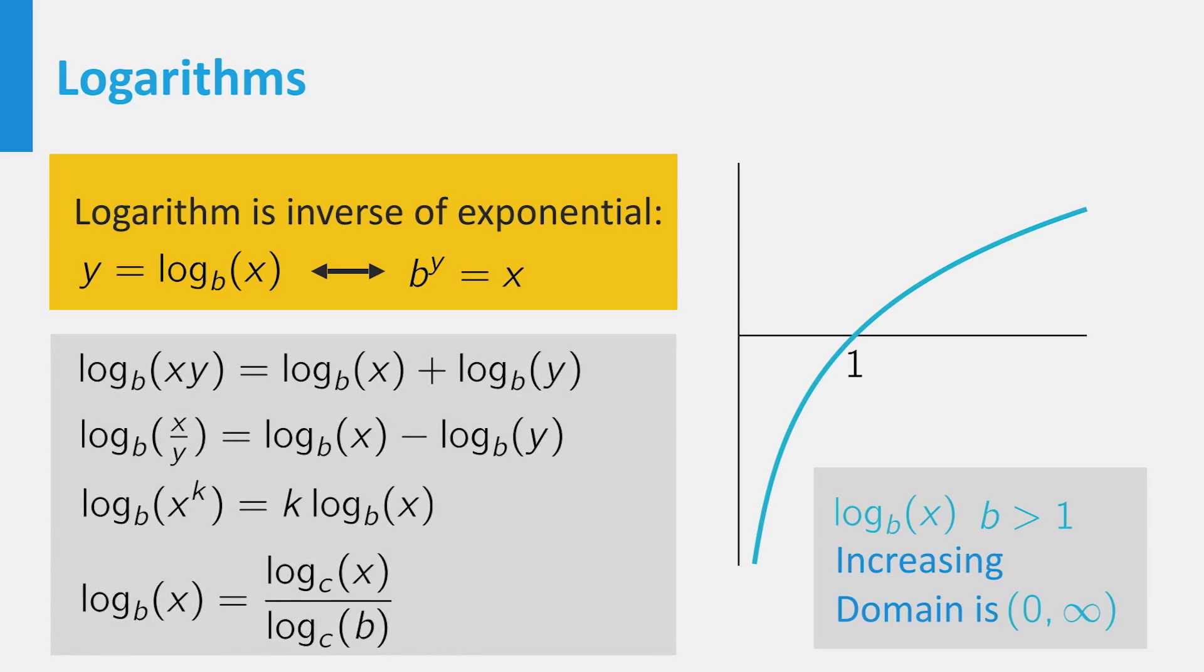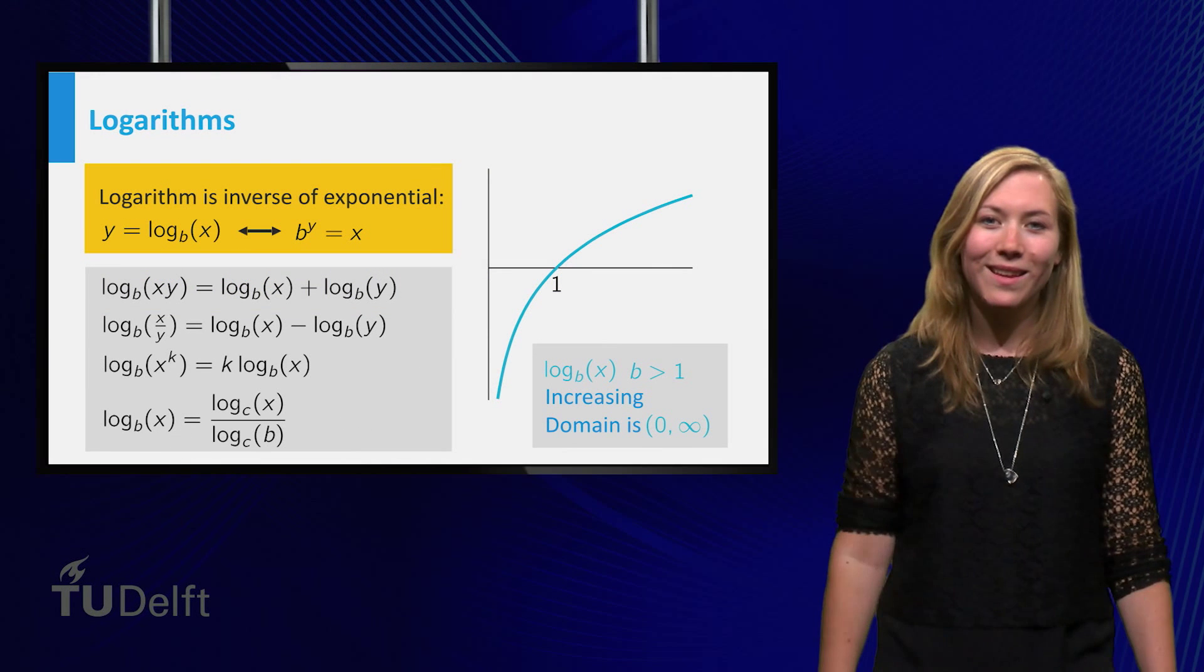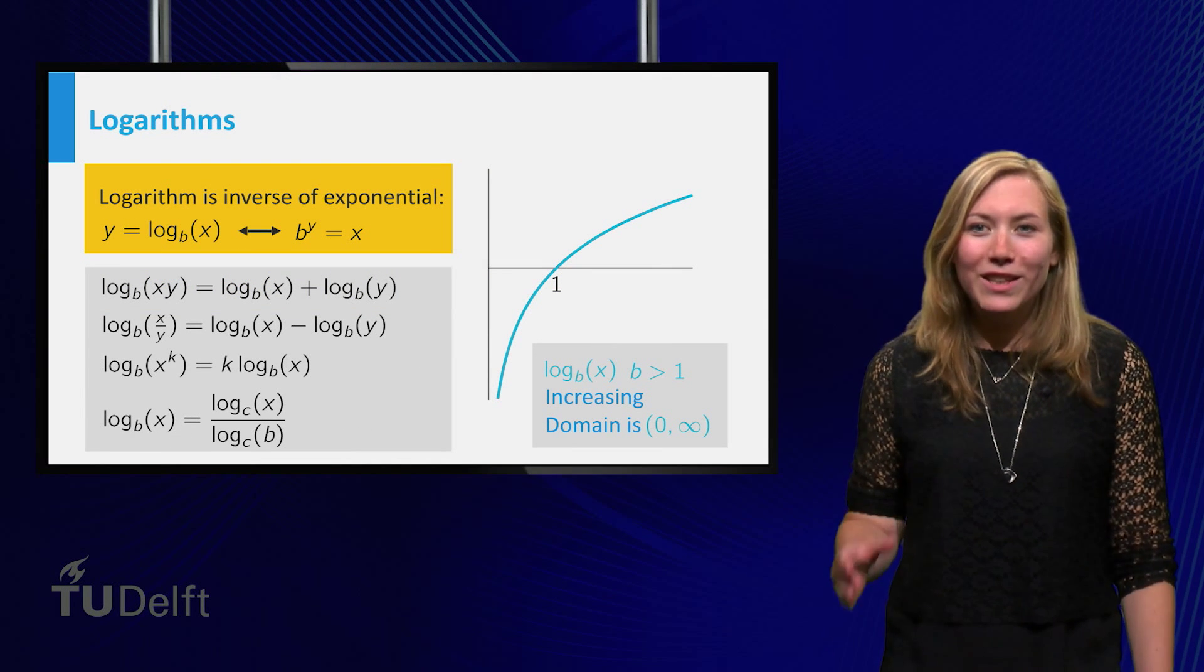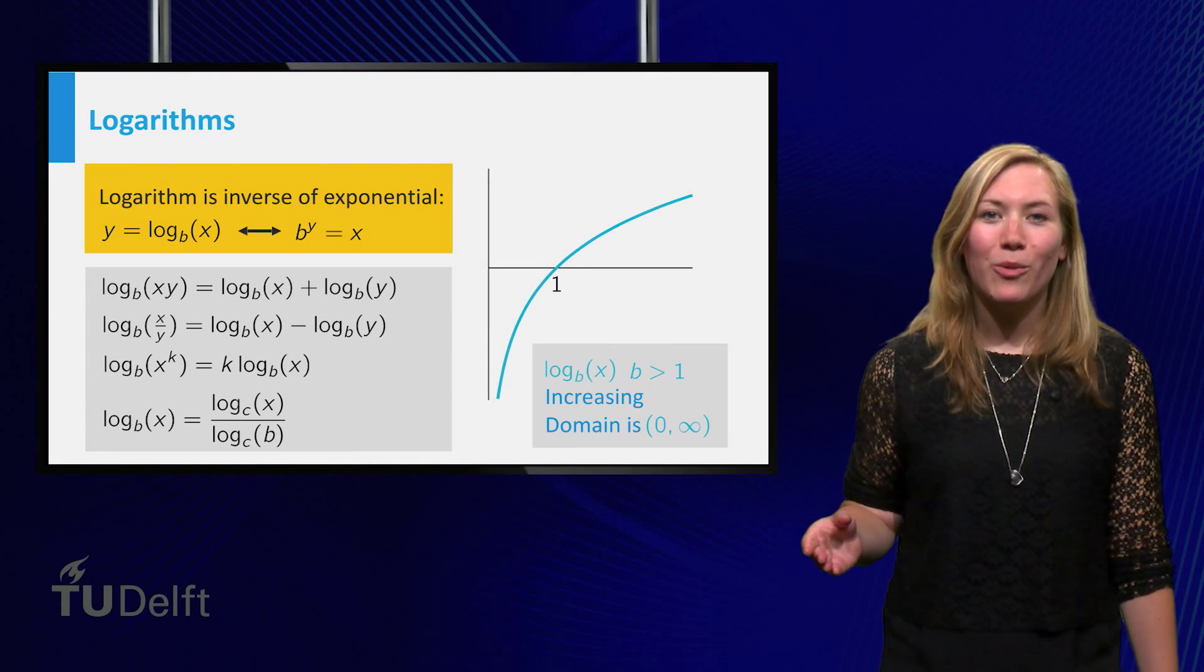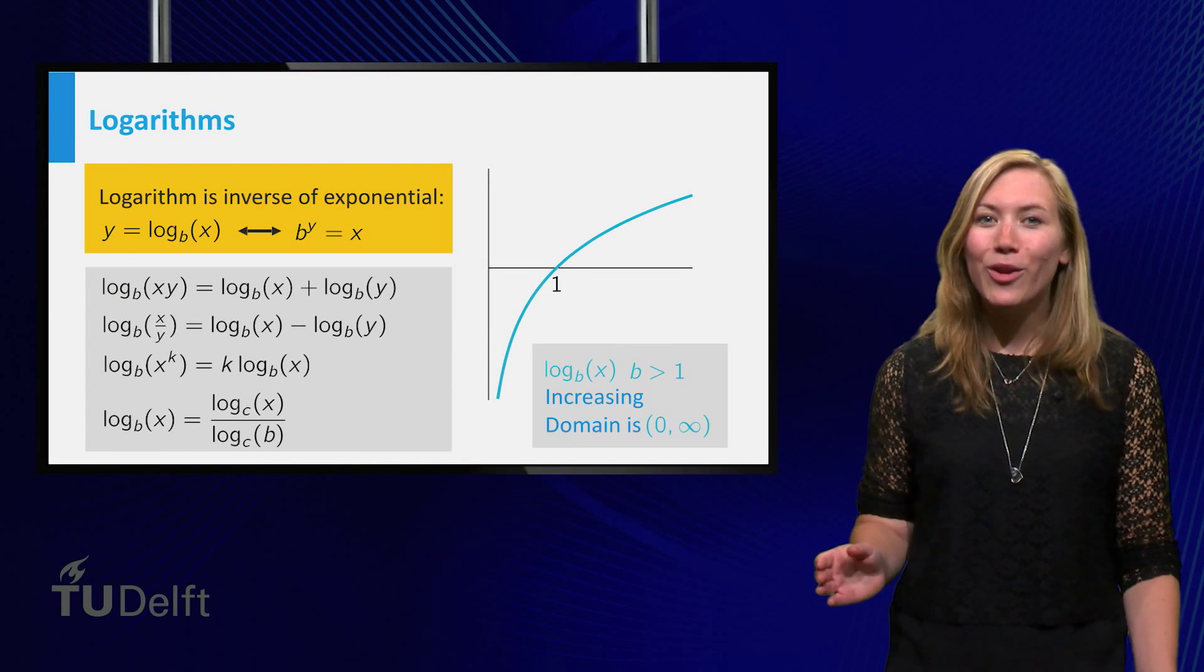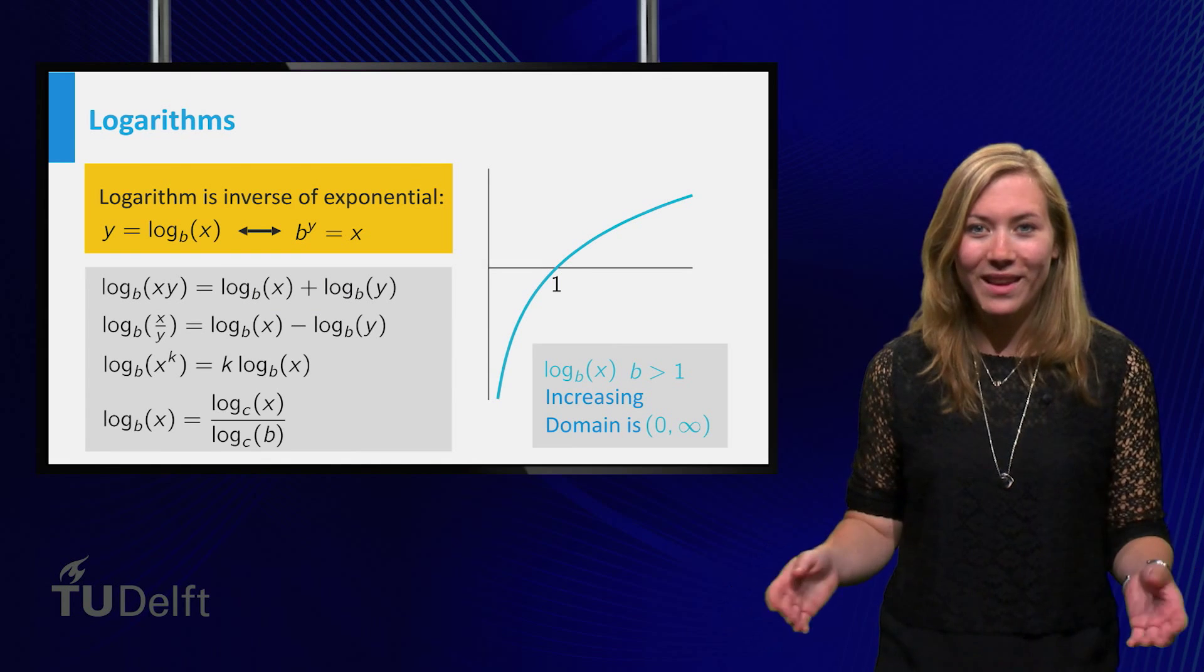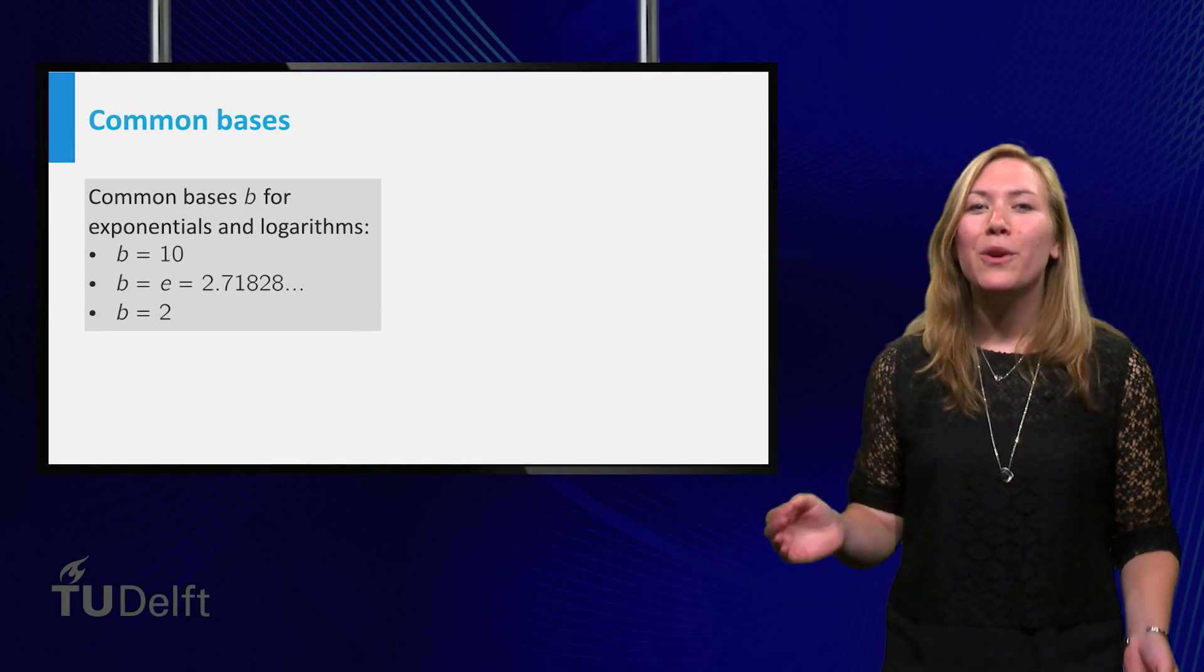The rules of calculation for exponential functions translate to the rules for the logarithm. The last formula shows that you only need logarithms in one base to calculate all others. Typically, only a few bases are used.